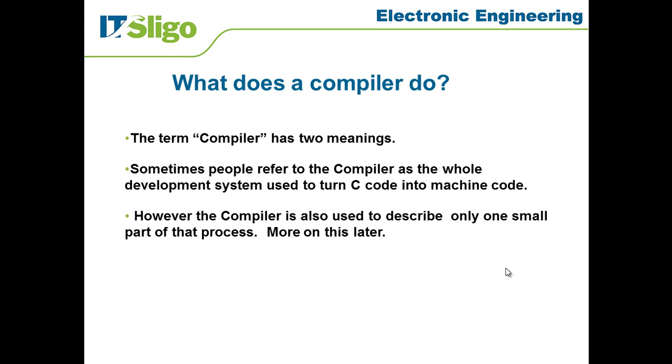To start with, what does a compiler actually do? This is a little bit difficult because the term compiler has two meanings in general use. Sometimes people refer to the compiler as the whole development system used to turn C code into machine code or into the code that the computer will actually run.